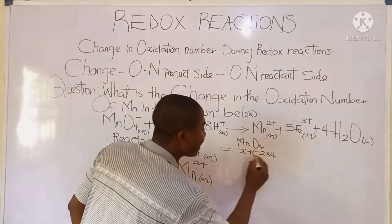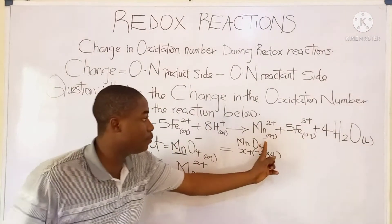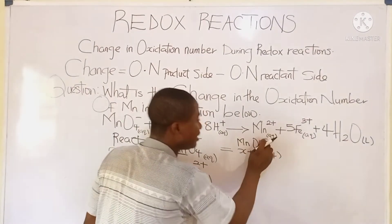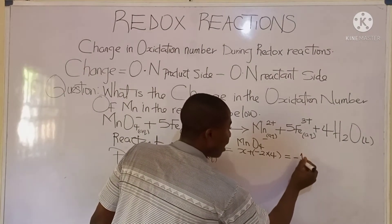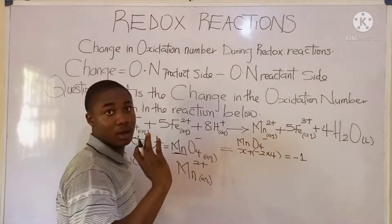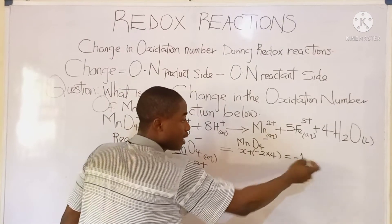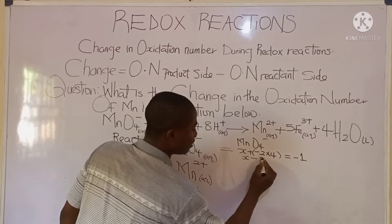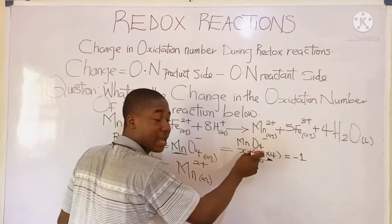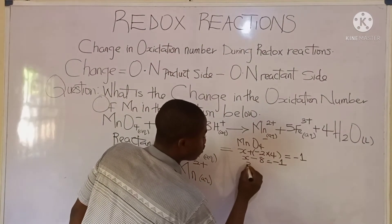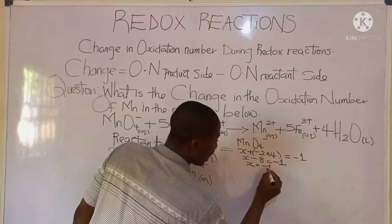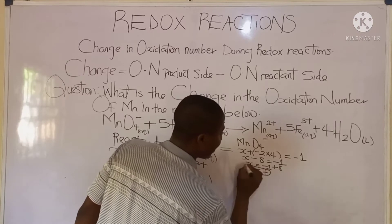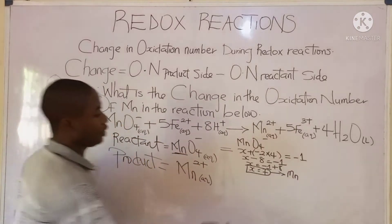It must be noted that whenever a compound gives a charge, we equate the oxidation numbers to the value of the charge. Here the charge is negative 1, so it equals negative 1. If there is no charge, it becomes 0. Since the charge is negative 1, it becomes: X minus 8 equals negative 1. So X equals negative 1 plus 8, which gives X equals 7. This is the oxidation state of manganese in the reactant side.